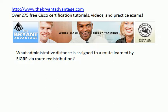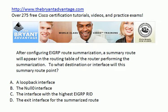Answer 1: this is an external route — an EIGRP external route. It's going to have an AD of 170. You'll also see the letters DEX in the routing table, where the D indicates it's an EIGRP route and EX indicates it is external. Answer 2: the summary route is going to point to the null zero interface, and this is a routing loop prevention feature.